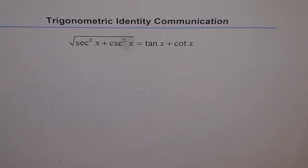Trigonometric identity communication part. Square root of secant square x plus cosecant square x equals tan x plus cotangent x.